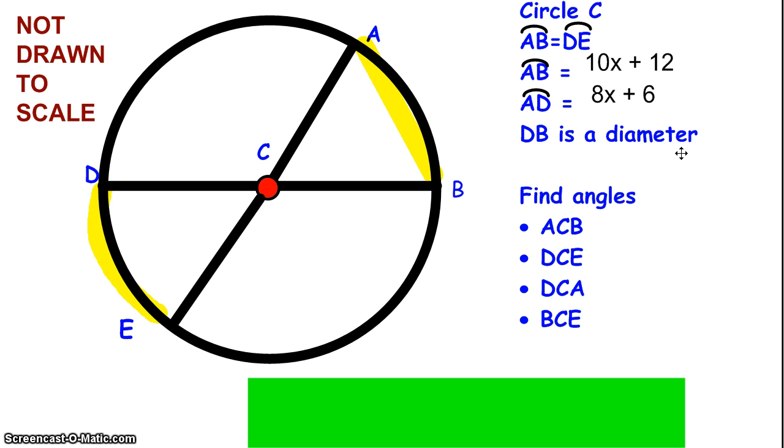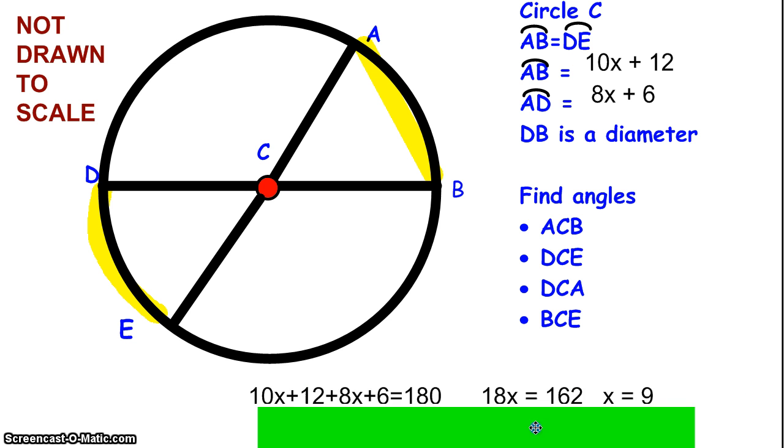With that in mind, I can write an equation to find the value of X, and then find the value of the different angles. The equation that I can use to find X is 10X plus 12 plus 8X plus 6 equals 180. When I go through and do the steps to solve the equation, I end up with the answer that X equals 9.